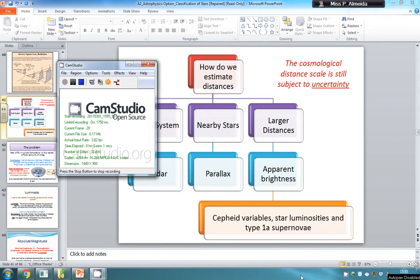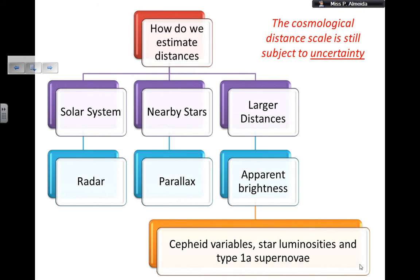Hey there, I'm back again, and today I'm going to be telling you how you calculate larger distances. So if you go on old videos, I told you already about how you work out with radar, and how you work out with parallax. Now we are going to see what happens when stars are so far away that I cannot even measure the parallax angle, and therefore I need to use a different way to estimate the distances.